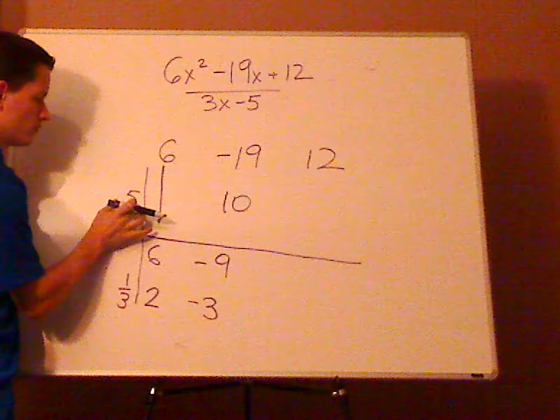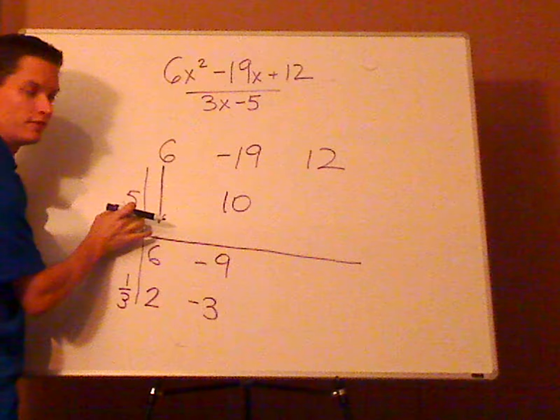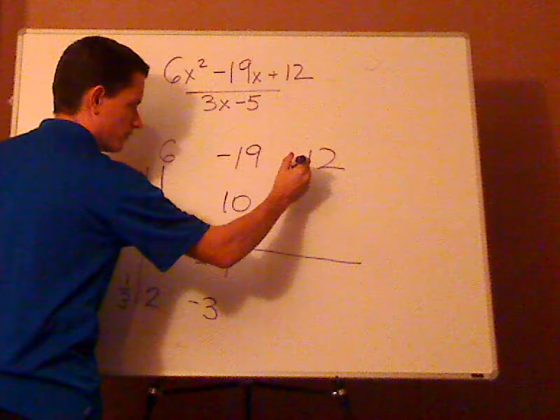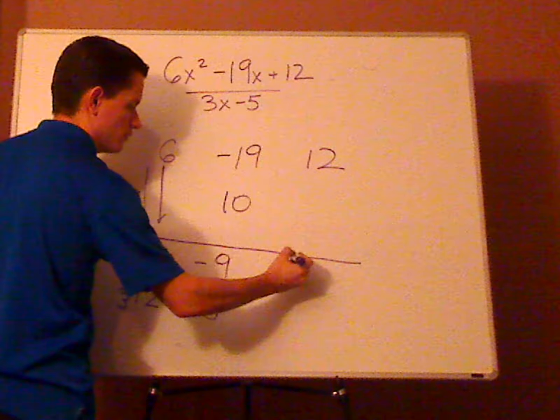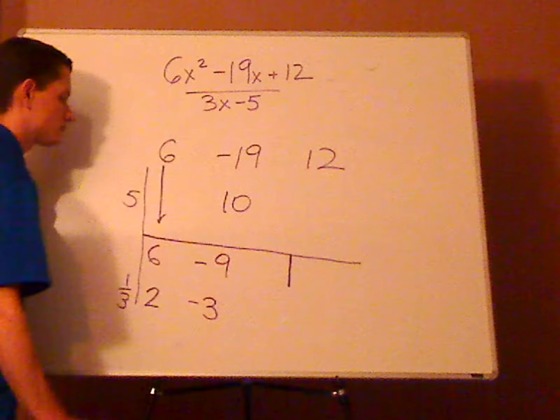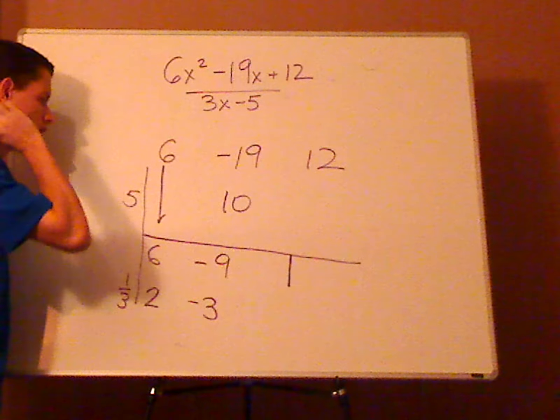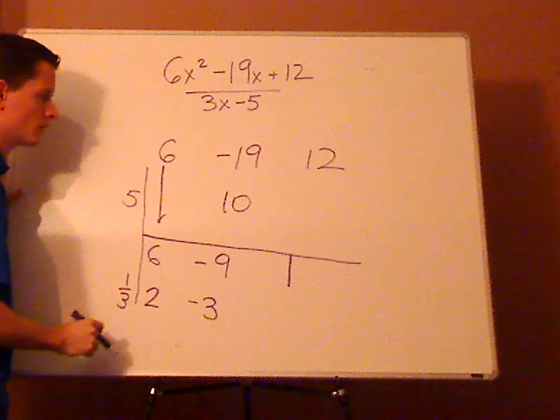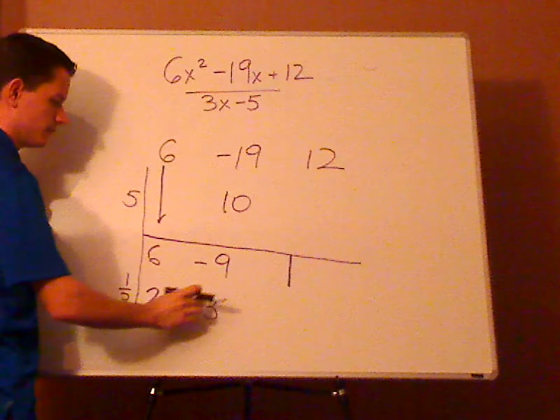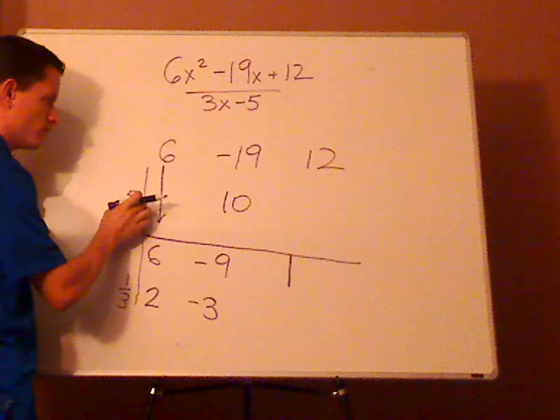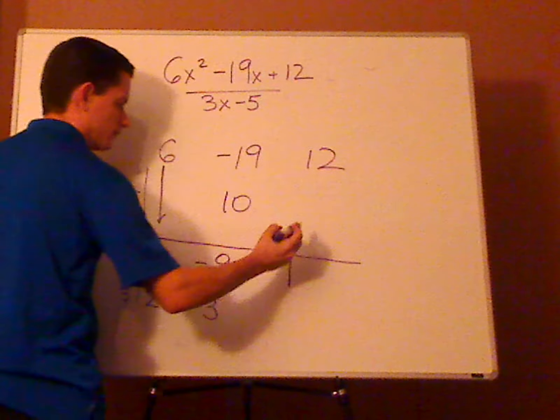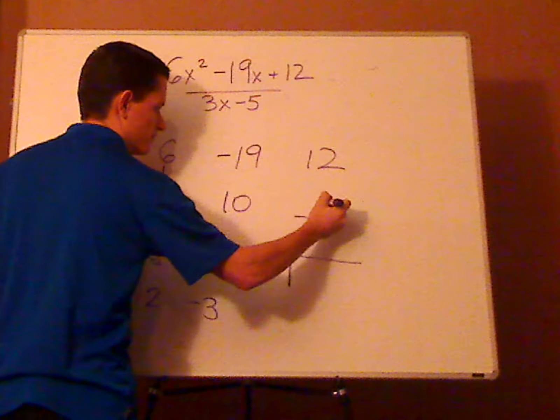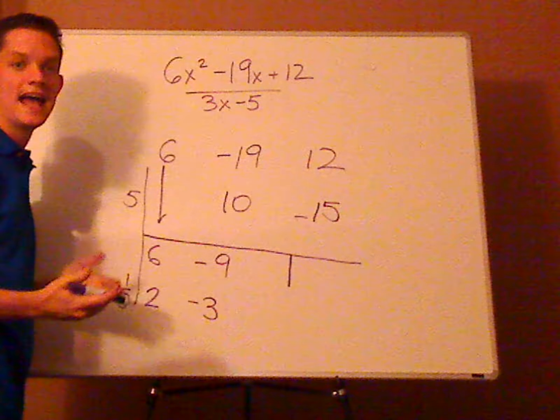Now whatever number of terms are here, that's going to be the number that you're going to have with your remainder. So that would be 1 term for your remainder. So then, take this negative 3, multiply it by 5. So that's negative 15.